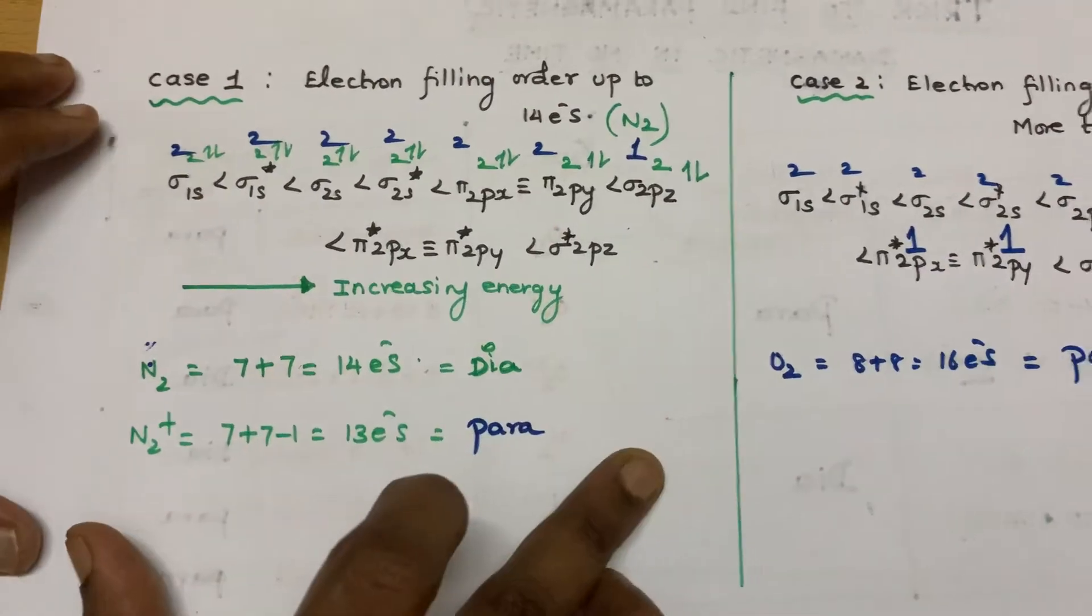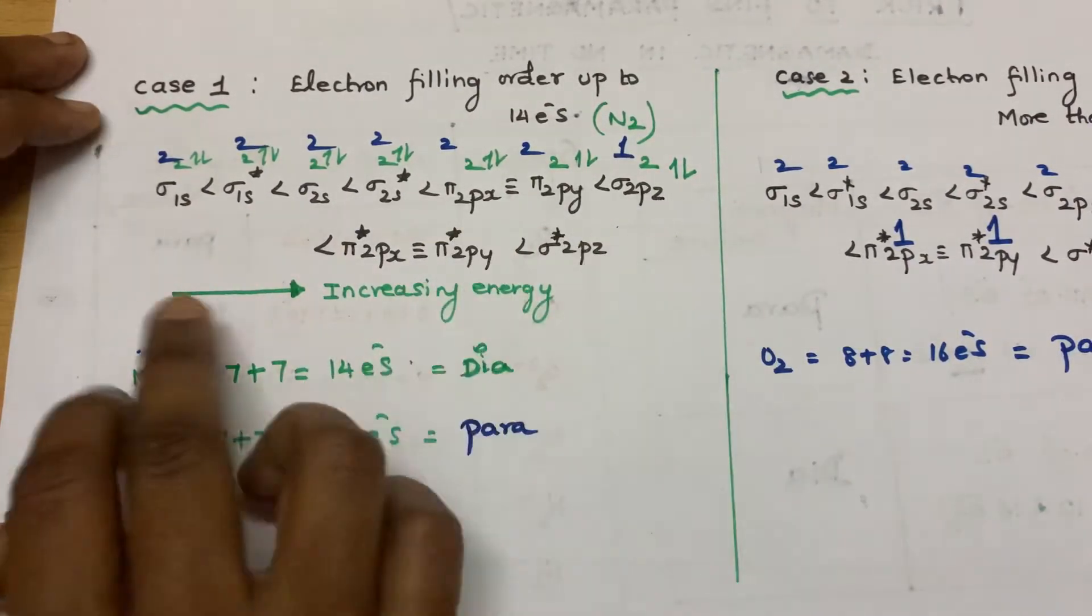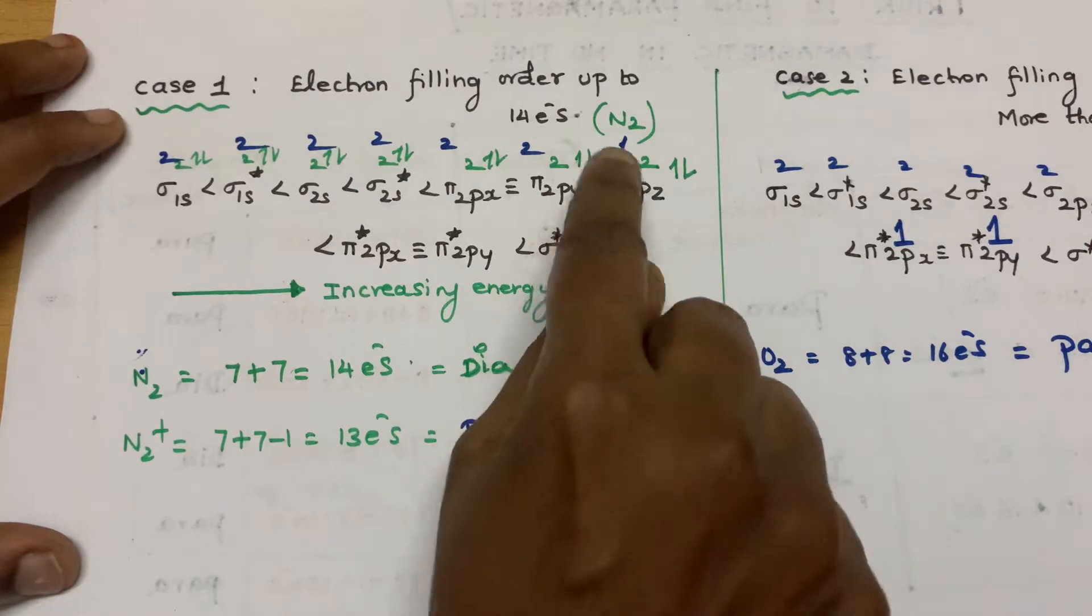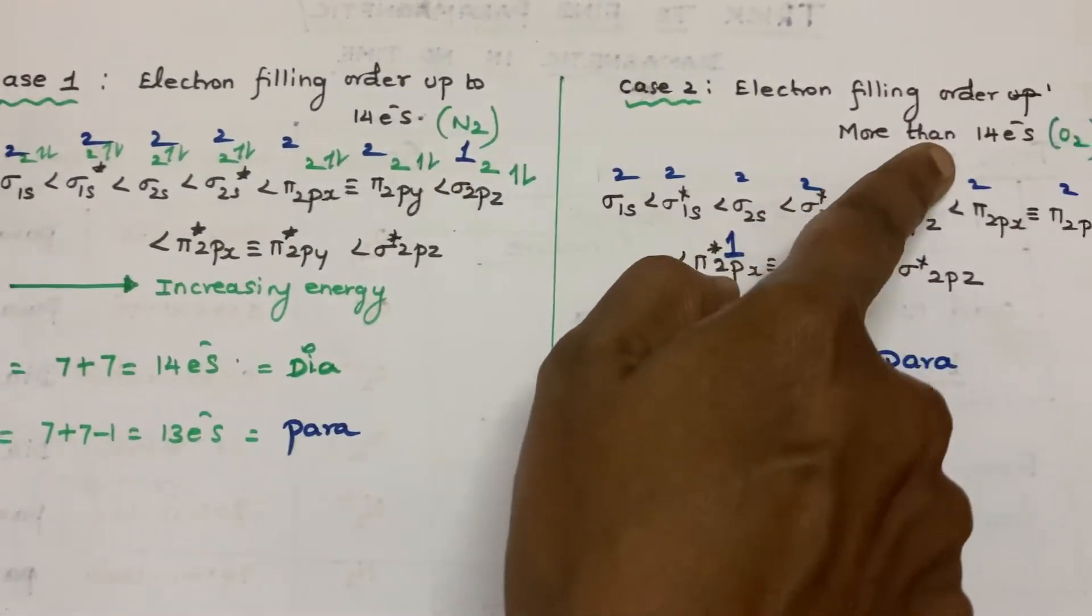So I have already discussed this spectroscopic method we use to apply for filling up of electrons up to 14 electrons and more than 14 electrons.